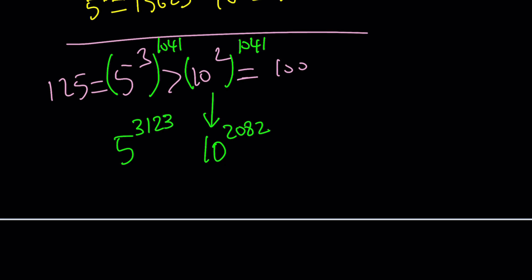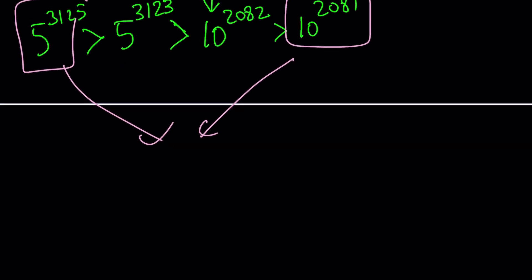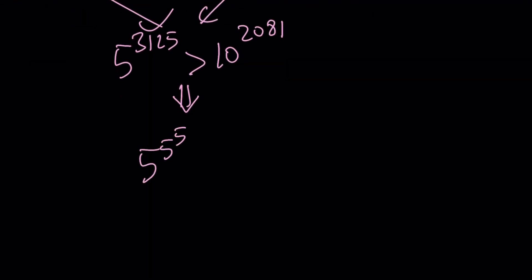Now we're going to do the following. These two numbers are definitely comparable. So, here's what we're going to add to the picture. We know that 10 to the power of 2082 is greater than 10 to the power of 2081 because 2082 is greater. And of course, 5 to the power 3125 is greater than 5 to the power 3123 because you know the reason. Now we can take this and using the transitive property, we can safely say that 5 to the power 3125 is greater than 10 to the power 2081, which implies that 5 to the power 5 to the power 5 is greater than 10 to the power 2081.